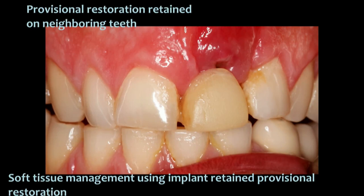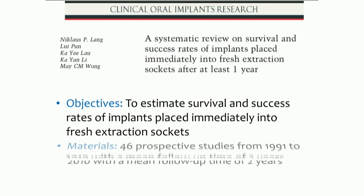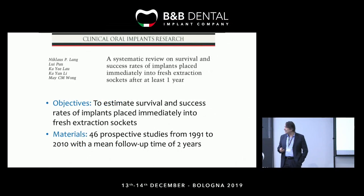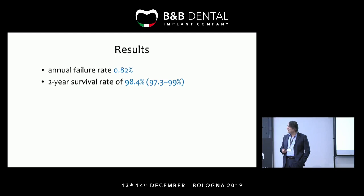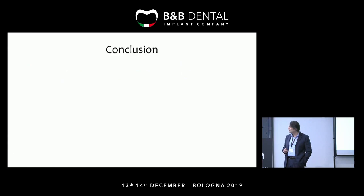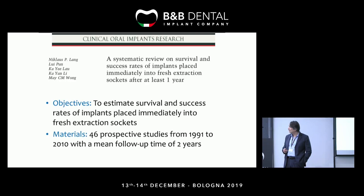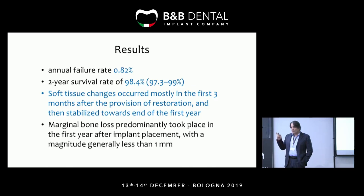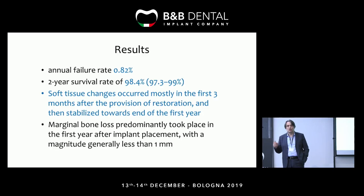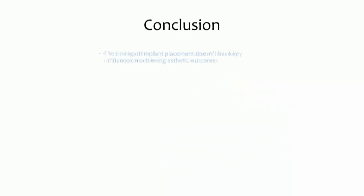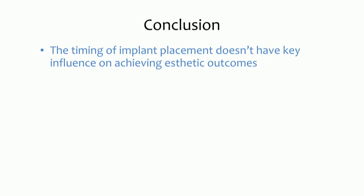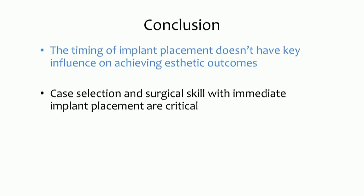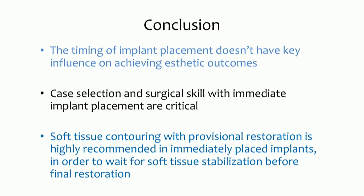To conclude the entire lecture: a paper by Wang and Lang analyzed 46 prospective studies and found that the annual failure rate was 0.82%. Very importantly, soft tissue changes occurred mostly in the first three months after provision of the restoration and then stabilized towards the end of the first year — so do not make any decisions until the end of the first year. The timing of implant placement does not have key influence on achieving aesthetic outcomes. Case selection and surgical skills with immediate implant placement are critical. Finally, every immediate implant placement, if possible, should be followed by immediate loading in order to achieve a good aesthetic result. Thank you for your attention.